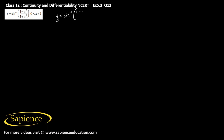Here we have been told that y equals sin inverse of (1 minus x square) by (1 plus x square), where x is greater than 0 and less than 1. So here, if we put x equal to tan theta, then it means that theta will be equal to tan inverse of x.